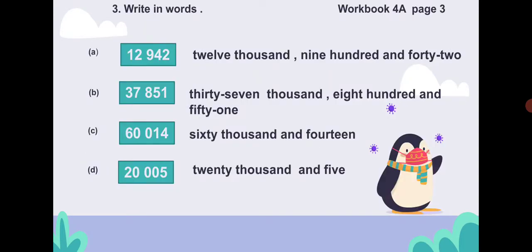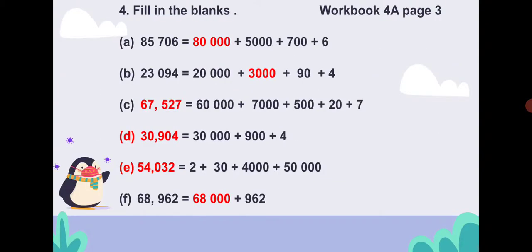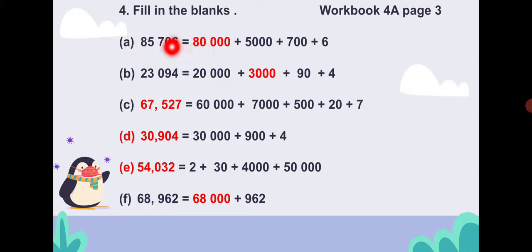Now come to workbook 4A, page number three, question number three — write in words. You have some numbers given, parts A, B, C, and D. You have to write in words and fill in the blanks. For 85,706: eight is on the ten thousands place, so that stands for eighty thousand.